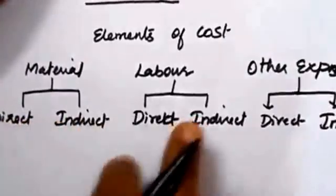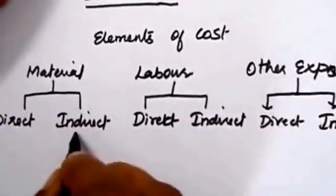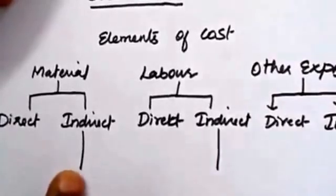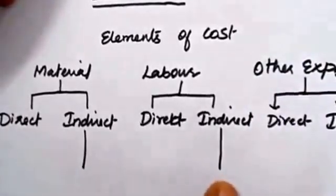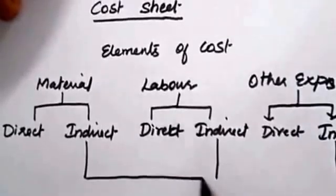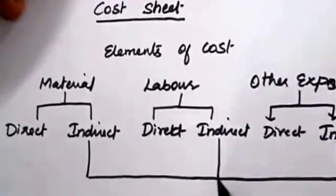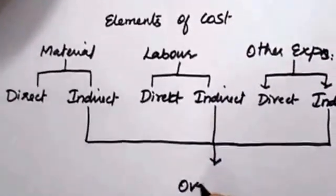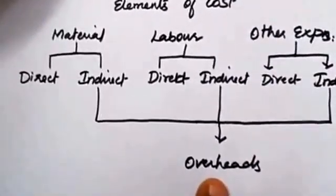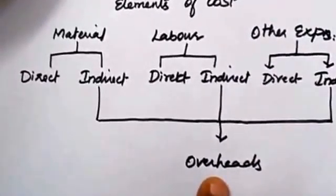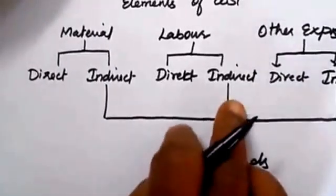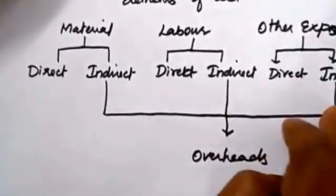All indirect expenses — that is indirect material, indirect labor, and indirect other expenses — all three indirect expenses are combinedly called as overheads. Overheads means indirect expense; it may be indirect material, indirect labor cost, or indirect other expenses.